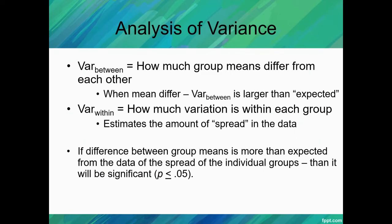So ANOVAs, which stand for analysis of variance, look to see the variation between groups and the variation within groups. They're going to see how much the group means differ from each other, and what we mean by that is whether the difference is more than we're expecting. We're also going to see how much the variation is within each group - so the spread of data in each group.